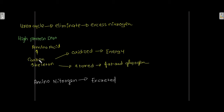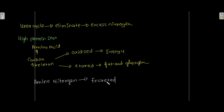An amino acid is made up of two things: the carbon skeleton and the amino nitrogen. The carbon skeleton is used for energy and storage. The amino nitrogen, on the other hand, is excreted. So if you are consuming more protein, you will excrete more nitrogen.